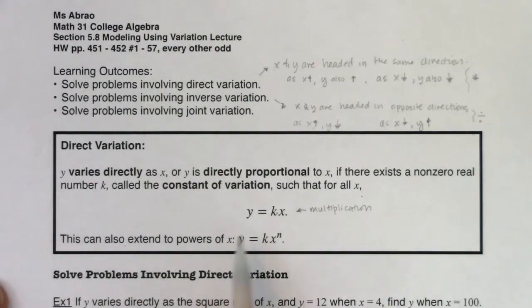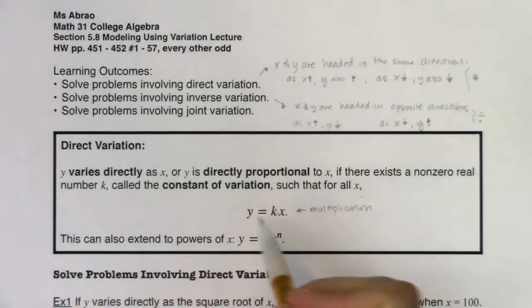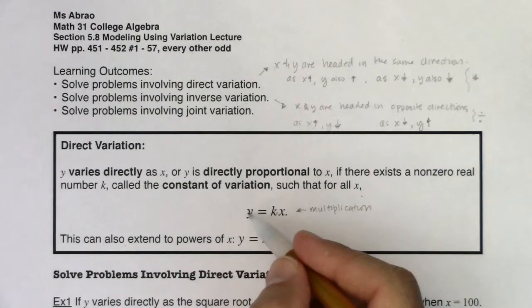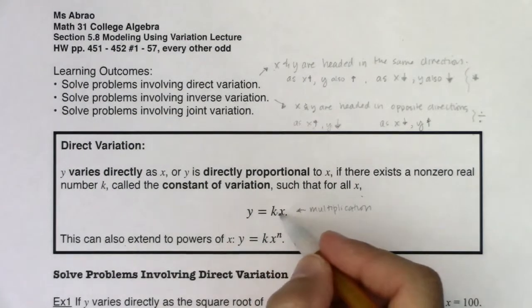And it doesn't have to just be x to the first power. Y can be directly proportional to the square of x, the cube of x, the fourth power of x. Again, it goes back to it depends on the word problem. So basic direct variation formula, I want to give you a heads up, don't marry yourself to y and x.